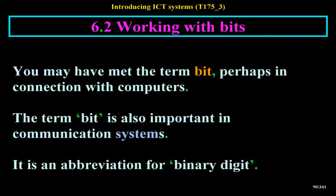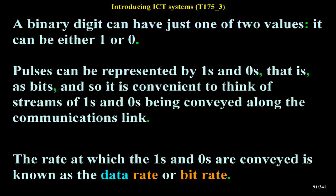Working with bits: you may have met the term bit, perhaps in connection with computers. It is an abbreviation for binary digit. A binary digit can have just one of two values: either 1 or 0. Pulses can be represented by ones and zeros, and so it is convenient to think of streams of ones and zeros being conveyed along the communications link.